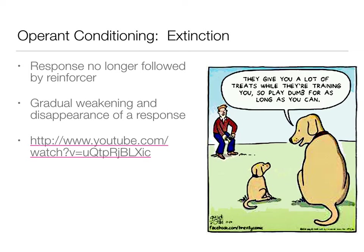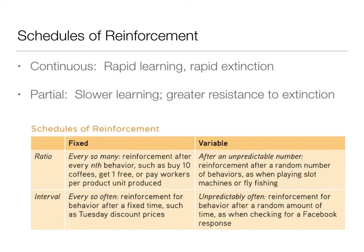This leads us to schedules of reinforcement. If you get rewarded every time you do a behavior, that's continuous reinforcement — you rapidly learn the association, but once reinforcement stops, the association breaks quickly. Sometimes more beneficial is partial reinforcement, which has slower learning but greater resistance to extinction. We have two types: ratios (every so many behaviors) and intervals (based on time), each of which can be fixed or variable.